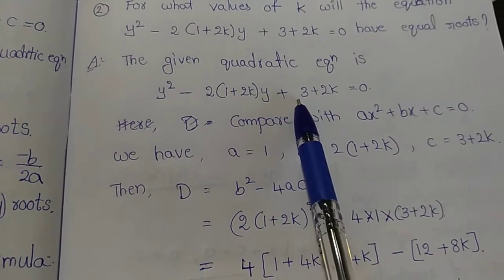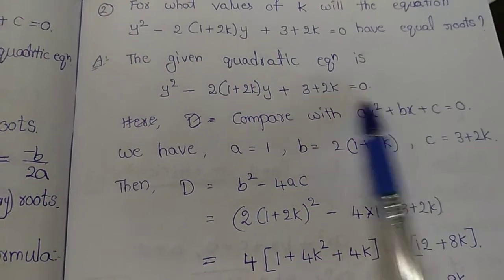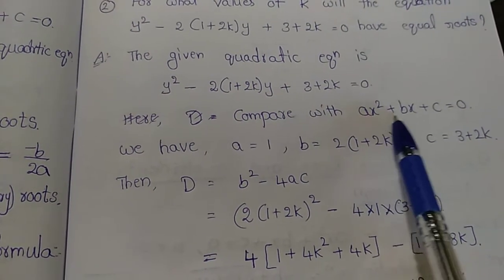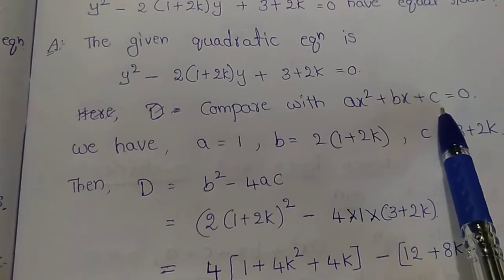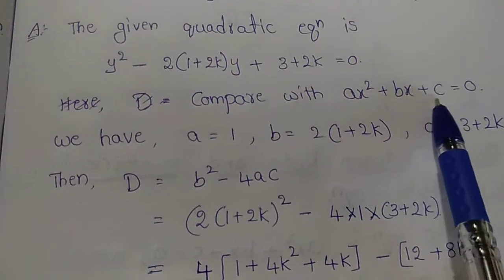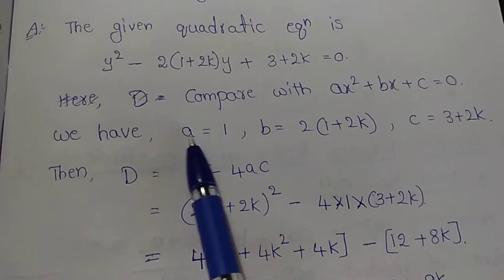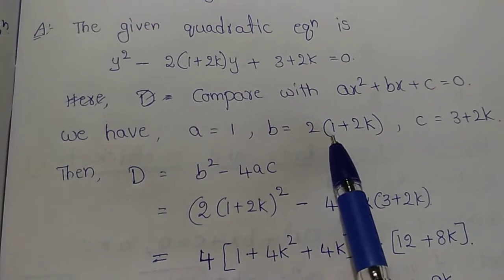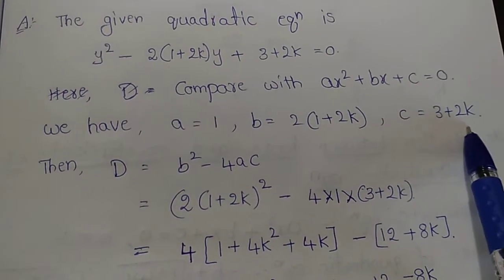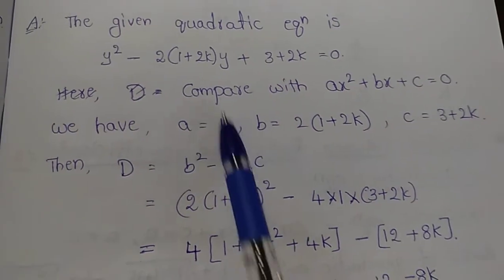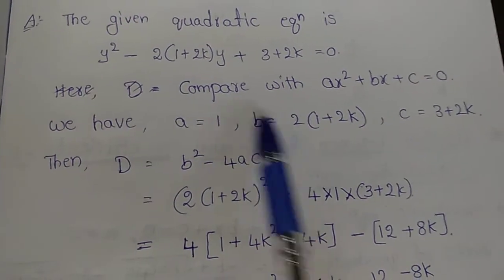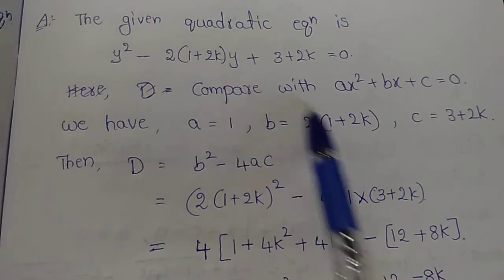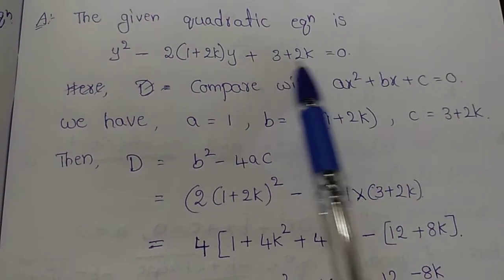Compare with the standard form ax squared plus bx plus c equals 0. Here a equals 1, b equals 2 into 1 plus 2k, and c equals 3 plus 2k.